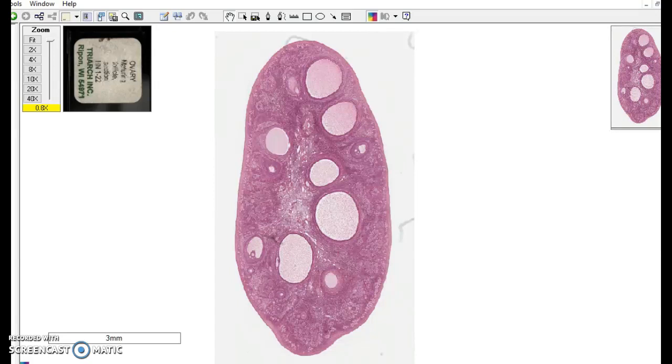In the seminiferous tubules, it produces sperm. And it's also found in the ovary, particularly in mature or graphene follicles, which are places where eggs are maturing.